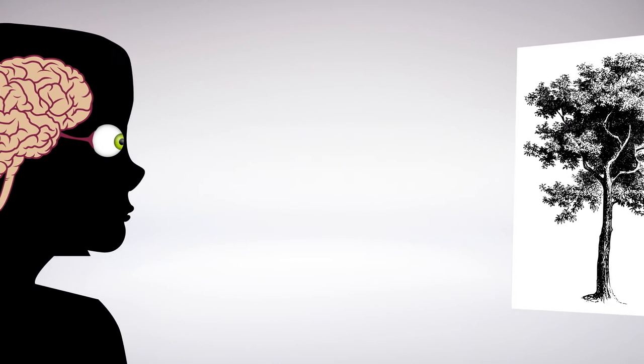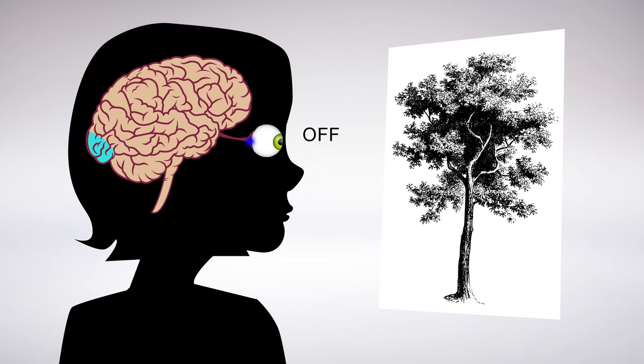The results suggest a visual system that uses off responses to convey information about location and on responses to detect the orientation of borders. It makes sense that the off responses would be used to map location because off retinal cells have properties that allow them to carry more fine-scale spatial information than on cells.